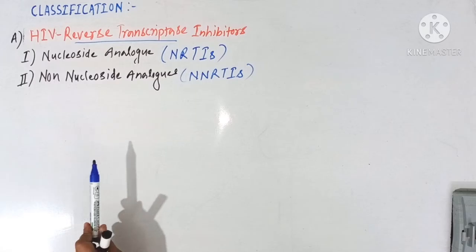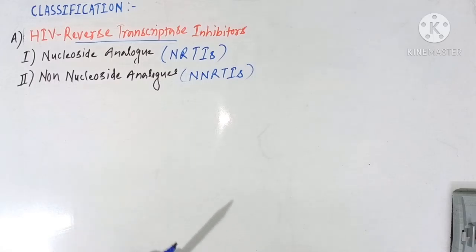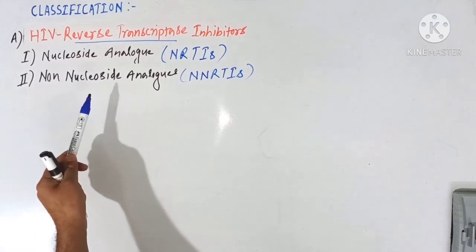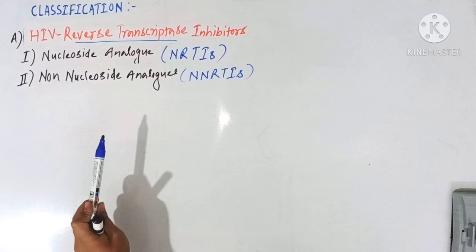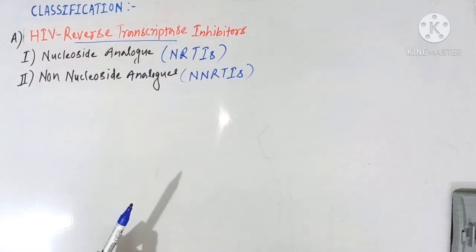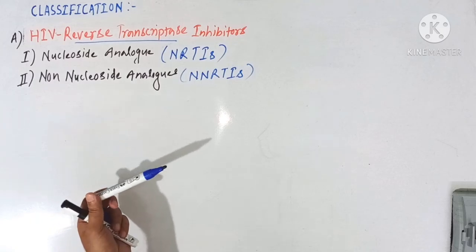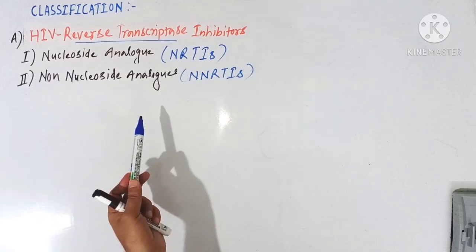Therefore, they do not act as a substrate of this reverse transcriptase enzyme. Then how do they inhibit this reverse transcriptase enzyme? So actually, they block the reverse transcriptase enzyme by binding to an allosterically located non-substrate binding site.